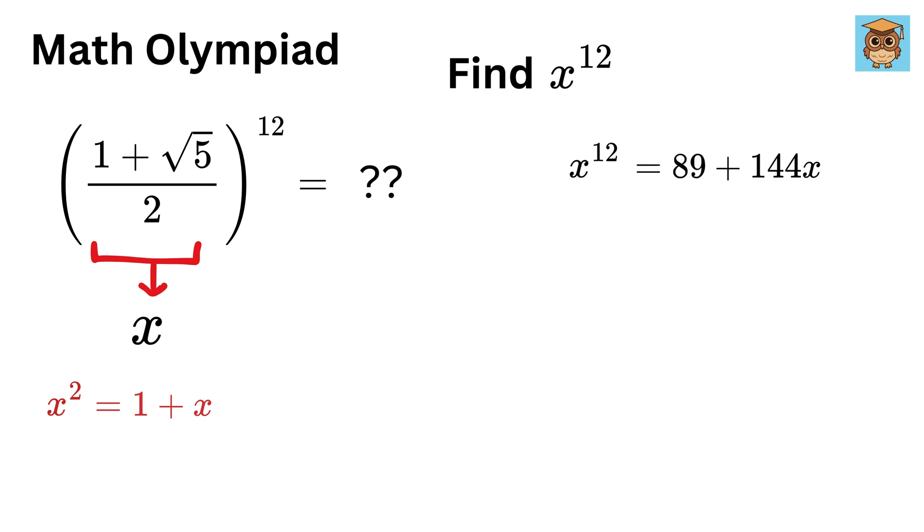Now just substitute the value of x = (1+√5)/2 to get 144[(1+√5)/2] + 89. This will get cancelled and it will be 72, so we have 72+72√5+89, or 161+72√5.